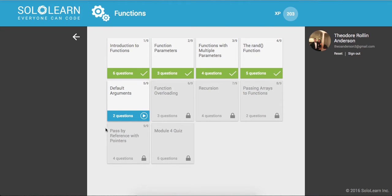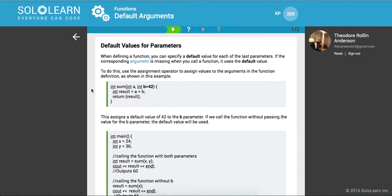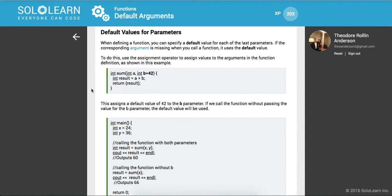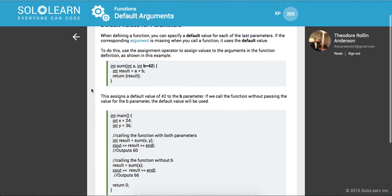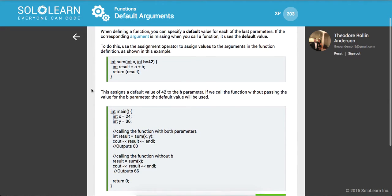So this lesson is the default arguments. We have default values for parameters. When defining a function, you can specify a default value for each of the last parameters. If the corresponding argument is missing when you call a function, it uses the default value.